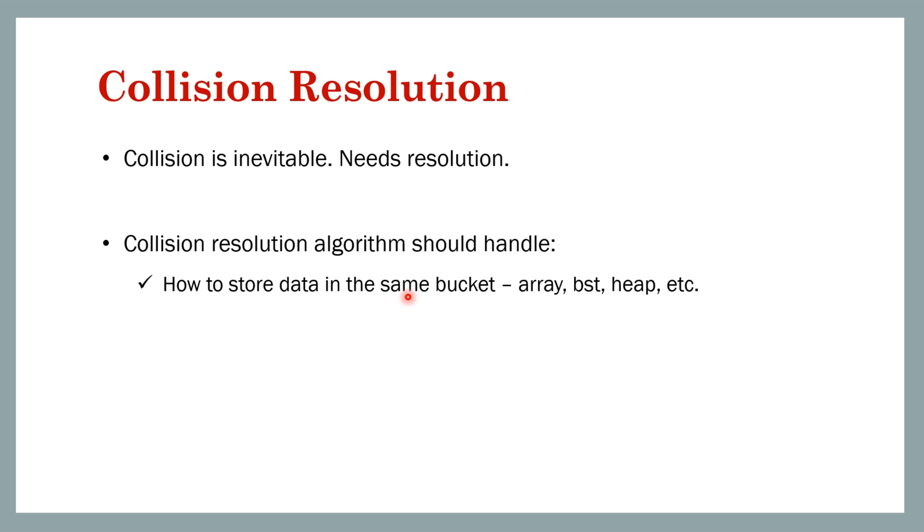A collision resolution algorithm that you will define should handle the following cases. First is how you will store the data when there are multiple keys in the same bucket. You can store it within the bucket. You can store the keys either in array, binary search tree, heap, or any other data structure. For example, let's say you have the maximum number of keys in a given bucket is let's say 10 or 20 or some small number. Then you can simply put them in the array and you can keep appending the new value at the end of the array.